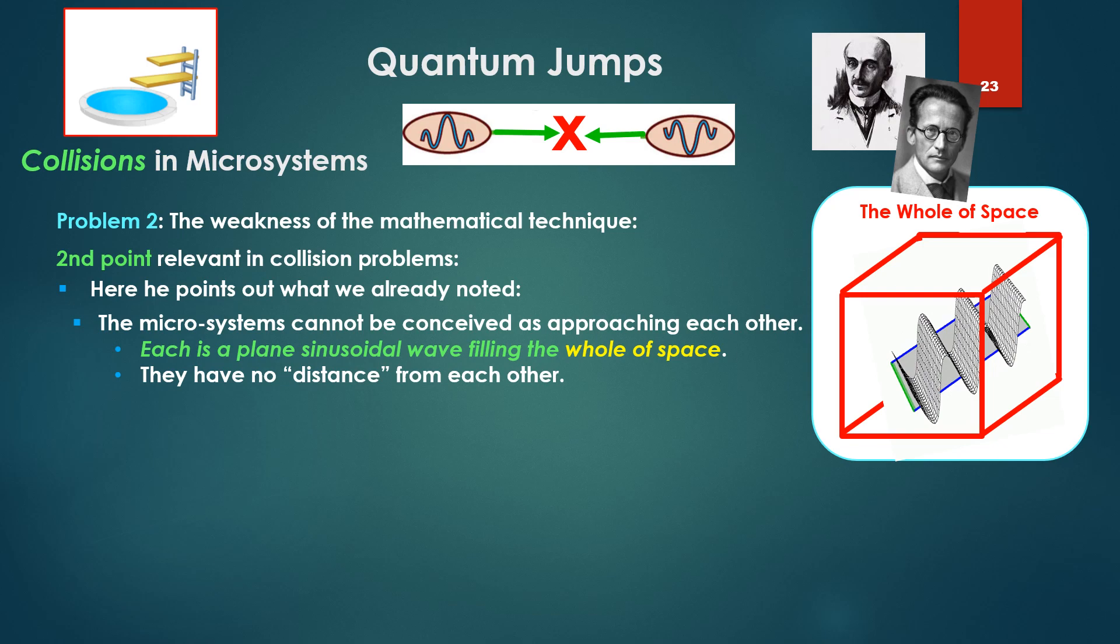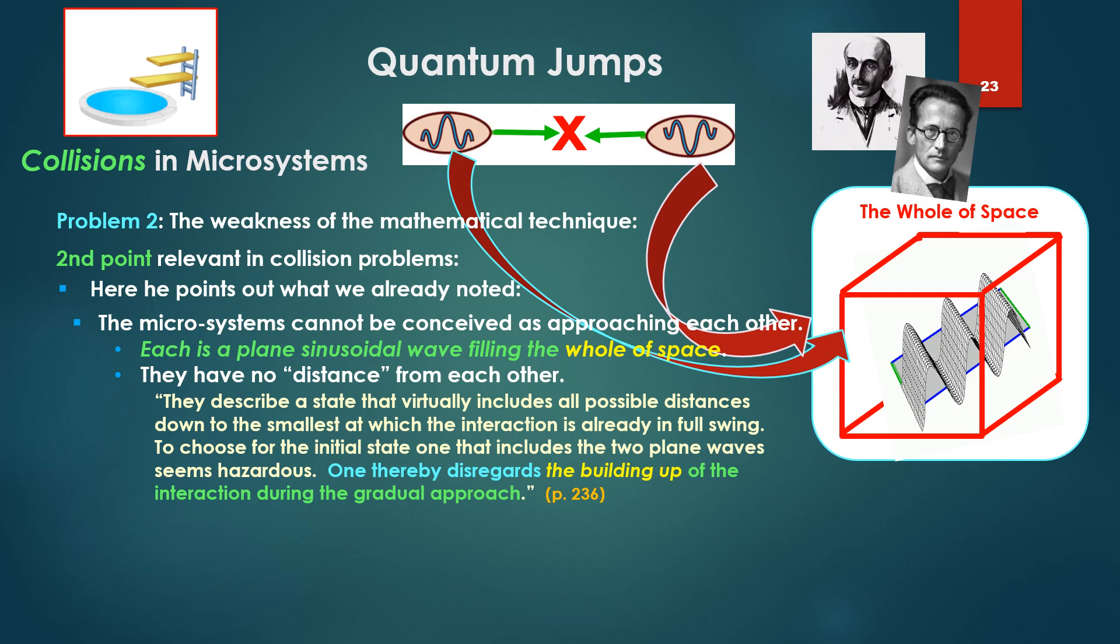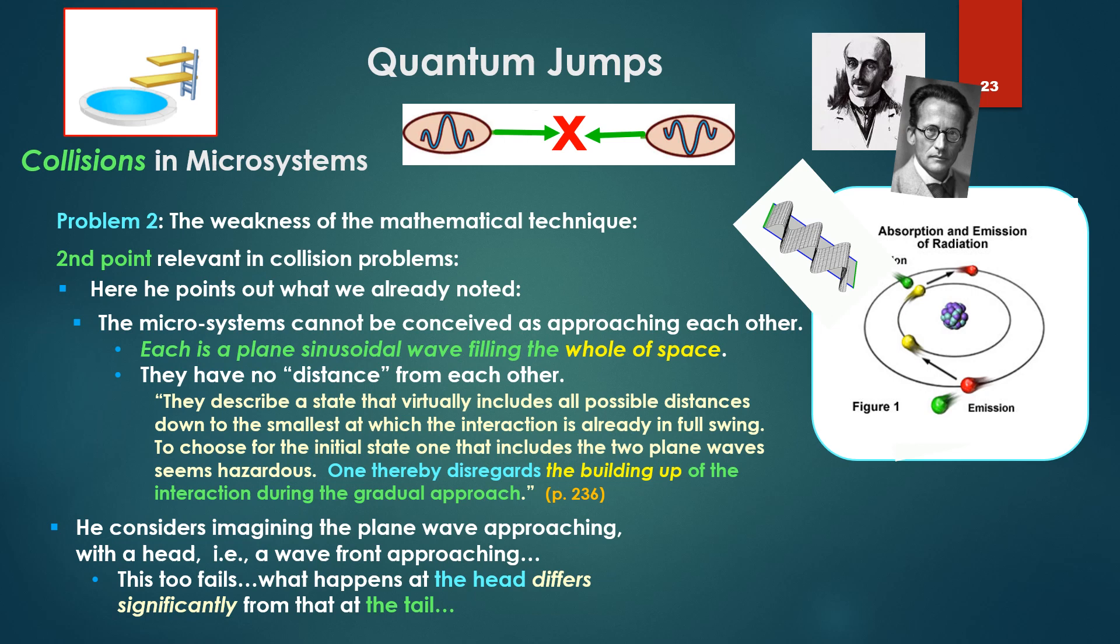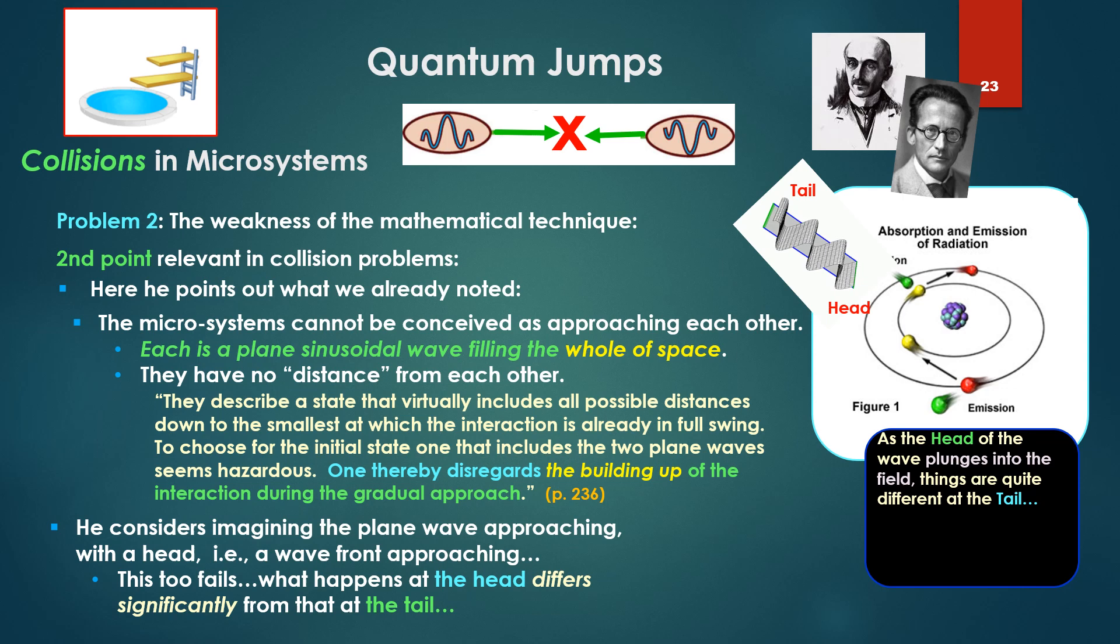Second point he makes: The microsystems cannot be conceived as approaching each other. Each is a plain sinusoidal wave filling the whole of space. They have no distance from each other. They describe a state that virtually includes all possible distances down to the smallest at which the interaction is already in full swing. To choose for the initial state one that includes the two plane waves seems hazardous. One thereby disregards the building up of the interaction during the gradual approach. He considers imagining the plane wave approaching with a head that is a wave front. This too fails.